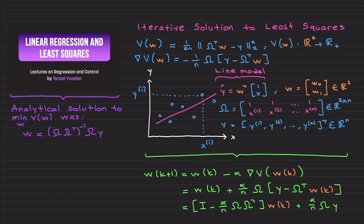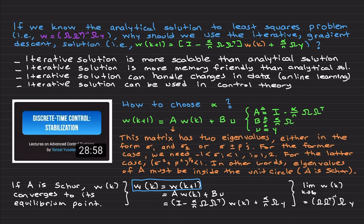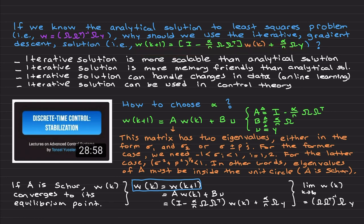Revisiting the question: if you know the analytical solution to the least squares problem from the previous video, why should you use the iterative gradient descent approach and solve it iteratively for k = 0, 1, 2, 3, 4, 5, ...? Here are the answers.